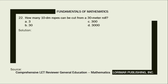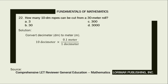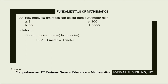Here is our solution. The first part is to convert decimeter to meter. Multiply 10 decimeters by 0.1 meter over 1 decimeter. That is 10 decimeters times 0.1 meter divided by 1 decimeter. Next, cancel out the same unit — the unit decimeter shall be canceled out — so we are left with the unit meter. 10 times 0.1 meter equals 1 meter.